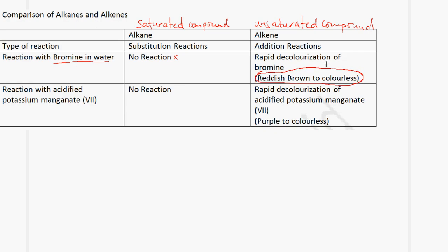When we ask for an observation, we need to specify the color change. With an alkene, the bromine solution changes from reddish-brown to colorless, and there is no reaction with an alkane. If we react with acidified potassium manganate-7, there is no reaction with an alkane, but in the case of an alkene, you get rapid decolorization — the solution changes from purple to colorless.